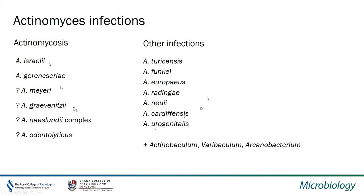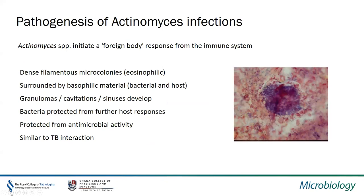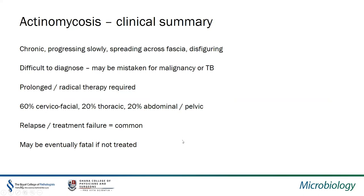The pathogenesis of actinomycosis is similar to TB-like interaction — the organism initiates a foreign body response from the immune system, forms dense filamentous microcolonies, and is protected from the host response, making it difficult to treat. Clinically, it is a chronic, slowly progressing disease that is difficult to diagnose and requires prolonged therapy. Around 60% of cases are cervicofacial, 20% thoracic, and 20% abdominal/pelvic. Relapse and treatment failure are common, and it can be fatal if untreated.